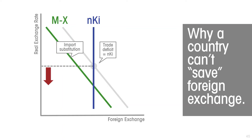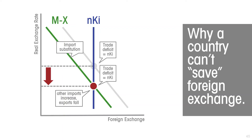The market doesn't want to save foreign exchange — the market wants to clear. The exchange rate falls to induce you to buy now-cheaper imports of other goods and services. The exchange rate keeps falling until all of the net foreign exchange coming in is used up. The market wants to clear, and the exchange rate shifts to make inflows and outflows equal. We end up with the foreign exchange market clearing, with the trade deficit once again being equal to net capital inflows, and in terms of the amount of foreign exchange available, we're back to where we started. In a market-determined exchange rate, a country cannot save foreign exchange.